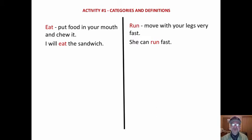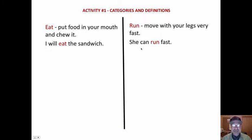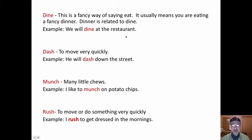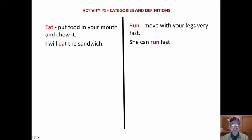It's always important when you introduce a new word that you put it in the context of a sentence — "I will eat the sandwich," "She can run fast." So we have two categories. We get the word in the context of a sentence and a definition using kid language. Children are then given four words — all related — and they see each word in the context of a sentence with a simple kid definition. Children then have to decide which category each word goes into.